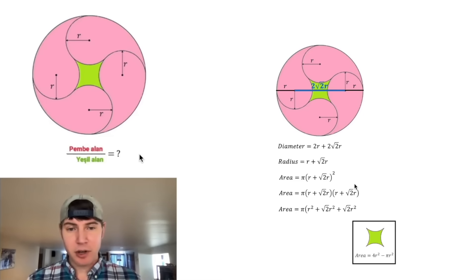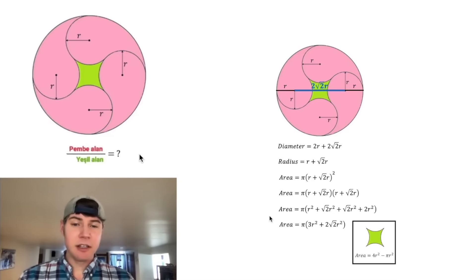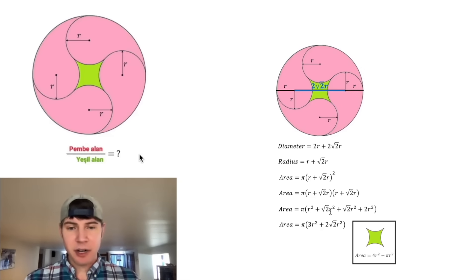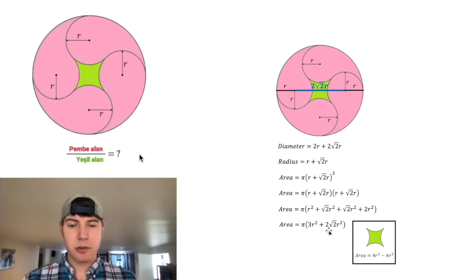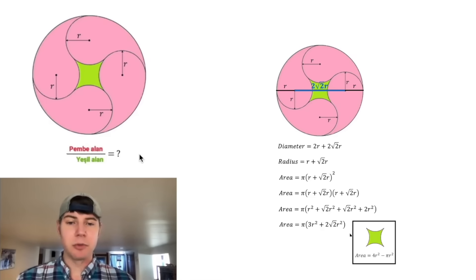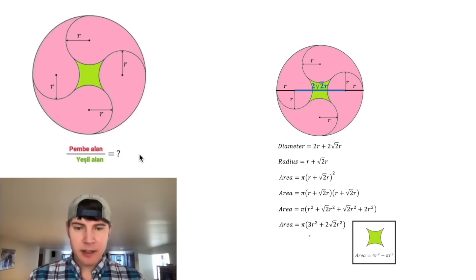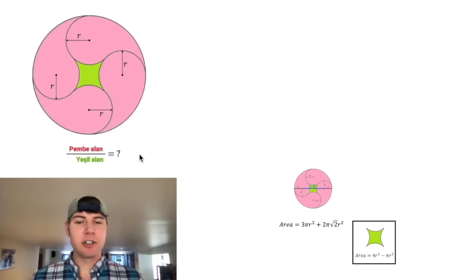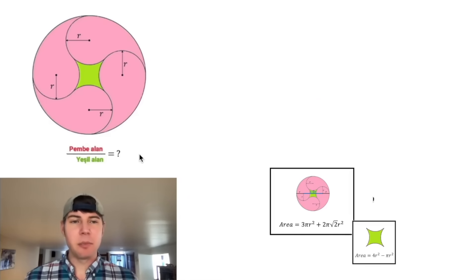√2·R times √2·R equals 2R squared. Cleaning this up: R squared plus 2R squared is 3R squared, and we have 2√2·R squared from the cross terms, giving 2√2·R squared. Distributing the π, we now have the area of the large circle, and we can put a box around that.